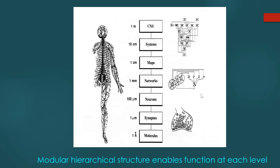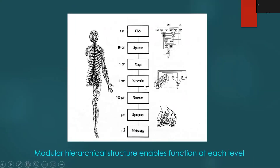Here is the case of the central nervous system: molecules at one angstrom, synapses, neurons, networks, maps, systems, and the central nervous system. There is functioning which takes place at each level, and the kind of function at each level is very different from the functions below. Modular hierarchical structure enables function at each level to emerge via the structuring.